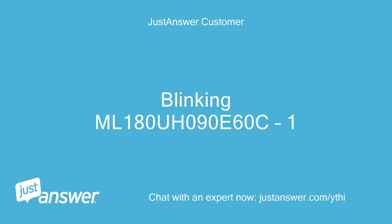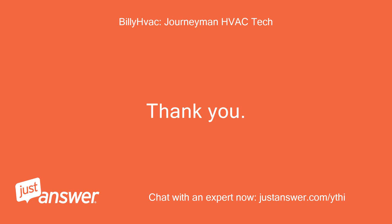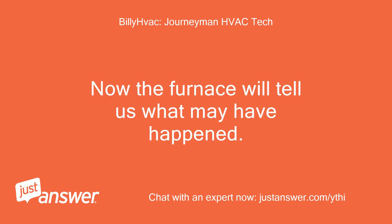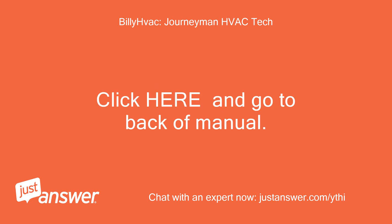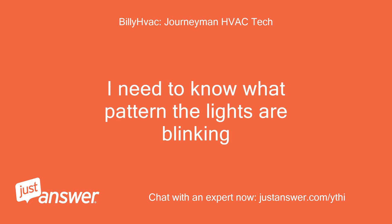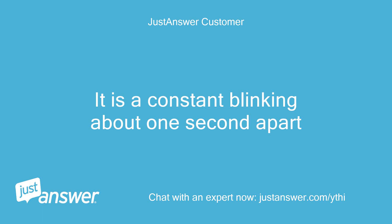Blinking. Furnace model: ML180A-090-E60C-1. Now the furnace will tell us what may have happened. Click here and go to the back of the manual. I need to know what pattern the lights are blinking. It is a constant blinking, about one second apart.